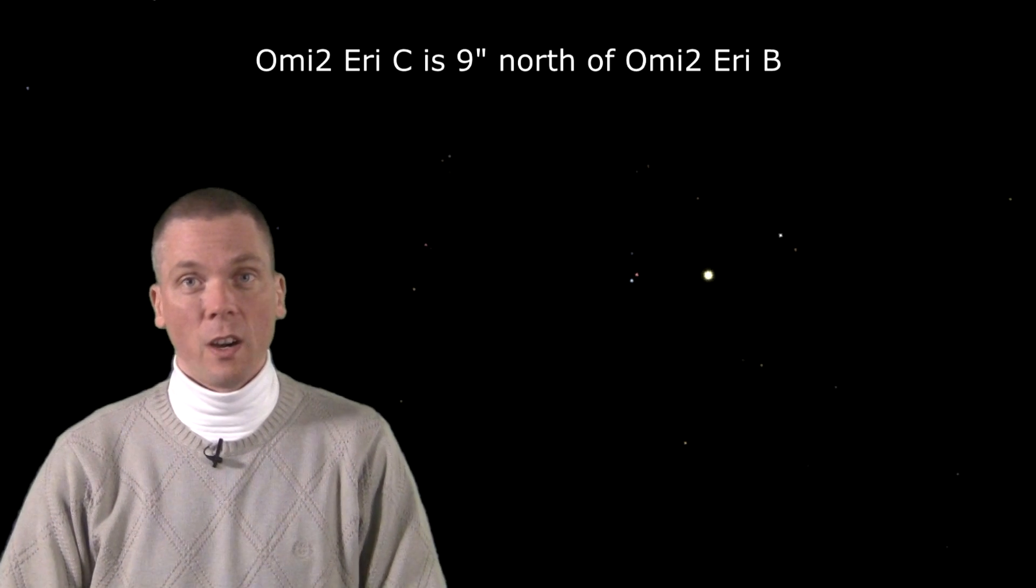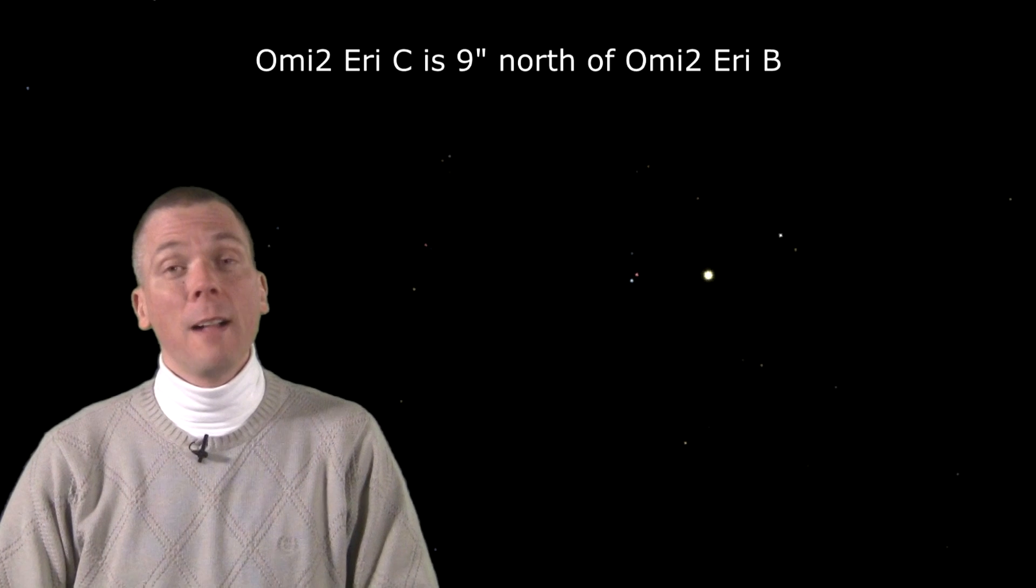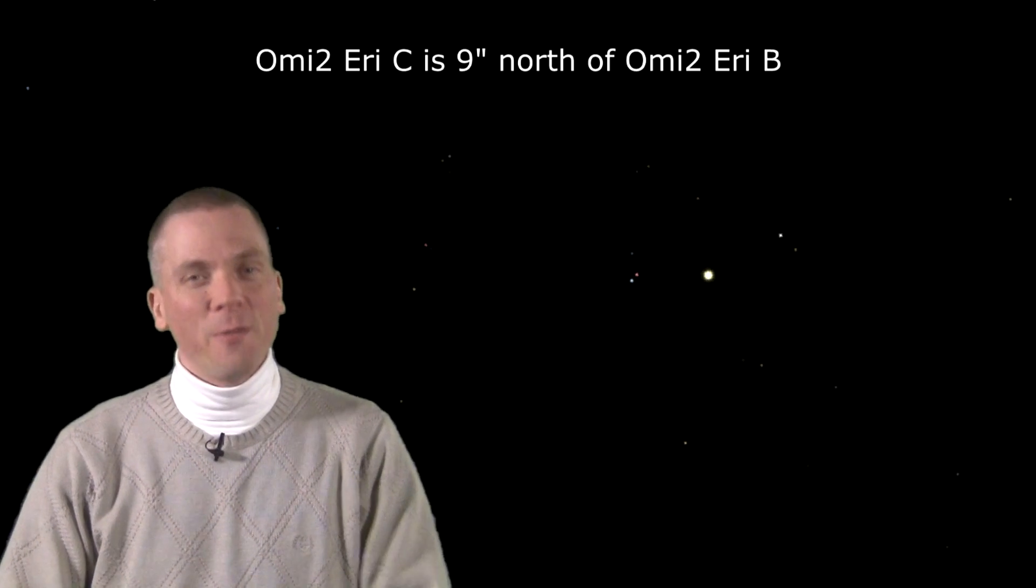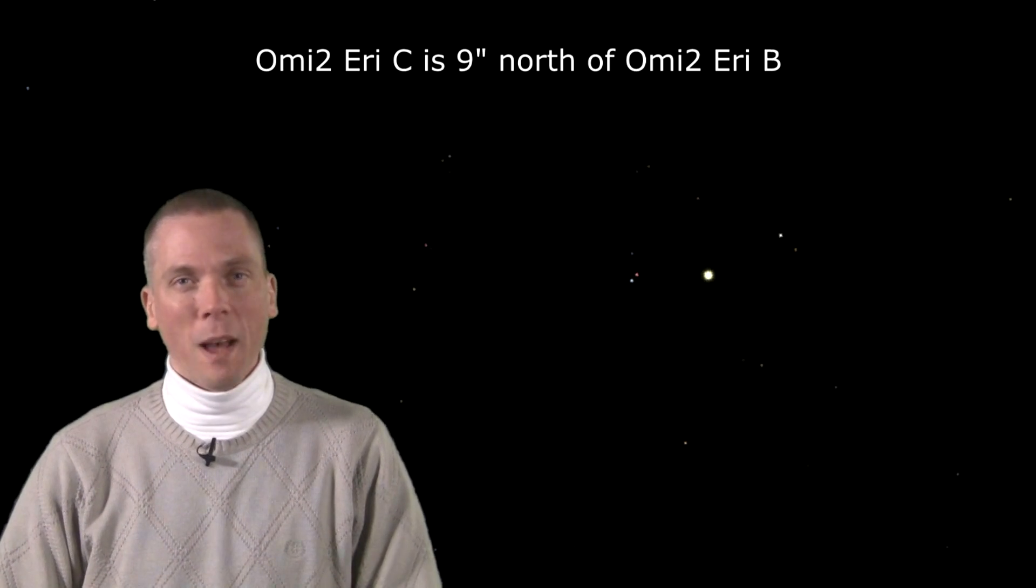But beyond that, the white dwarf itself has a companion, a red dwarf star, presently at its furthest angular distance from our perspective at 9 arc seconds. At magnitude 12 however, very dark skies or a 6 inch or larger scope will be needed to spot it.